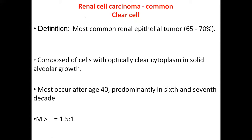The most common renal epithelial cell tumor, comprising 65 to 75 percent of renal cell tumors, is the clear cell tumor. Histologically, this tumor has an alveolar or nested type of growth pattern, containing cancer cells with clear cytoplasm. Because of this, the tumor is also known as clear cell carcinoma.